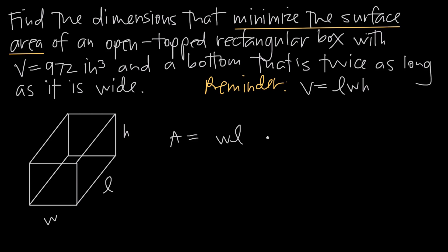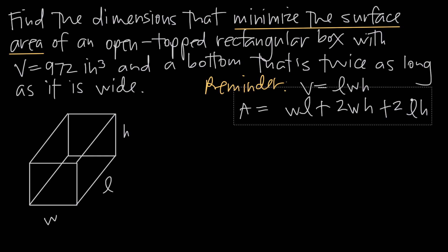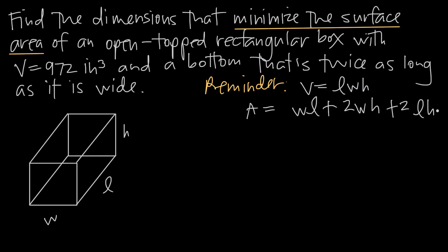The area of the front side is width times height, W times H. The back is also W times H, so we multiply by 2 for front and back. Then the left and right sides each have area length times height, L times H, so we multiply by 2 for both. This gives the complete surface area formula for the open-topped rectangular box.